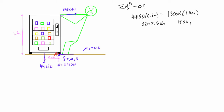These are not equal to each other — the left-hand side is greater than the right-hand side. The left side, 2207.5 N·m, is the maximum moment the weight of the vending machine can resist about point A. The right side, 1950 N·m, is the moment the guy is applying by pulling. He's only applying 1950 N·m, but this thing can resist up to 2207.5 N·m, so it is not going to tip.